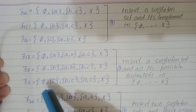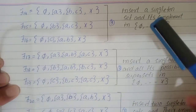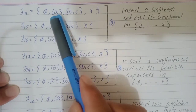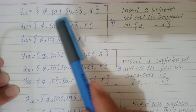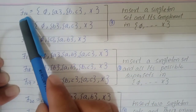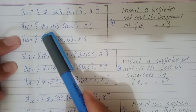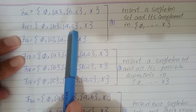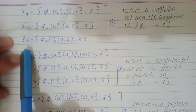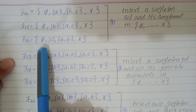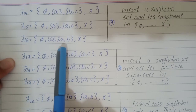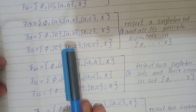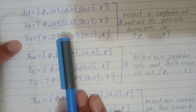For the next three topologies from τ14 to τ16, we insert a singleton set and its complement into the set {φ, X}. For τ14 we take {A} and its complement {B,C}. For τ15 we take {B} and its complement {A,C}. For τ16 we insert {C} and its complement {A,B} between φ and X.